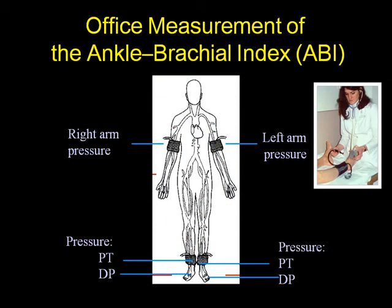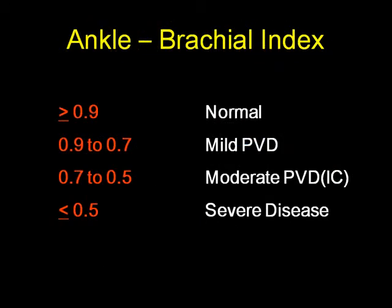The ankle-brachial index — numbers to know: greater than 0.9 is normal. If it is greater than 1.0, it is not necessarily normal due to calcification, especially in diabetics and end-stage renal disease patients. An ABI of 0.9 to 0.7 is mild peripheral arterial disease; 0.7 to 0.5 is moderate; below 0.5 is severe. If it is less than 0.3, the patient needs immediate attention to save their limbs — otherwise this patient is likely to lose them. An ABI of 0.3 and below represents critical limb ischemia that needs to be addressed quickly.